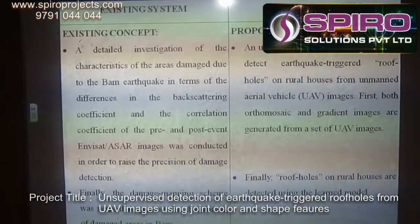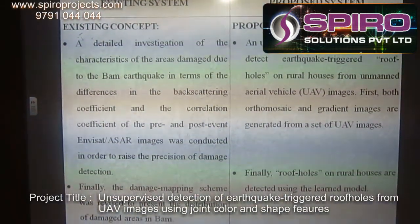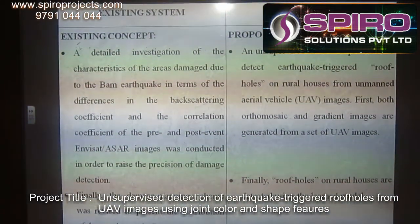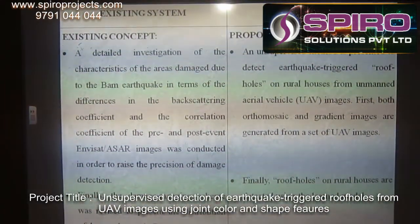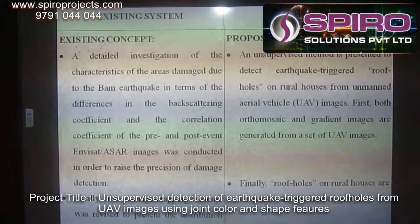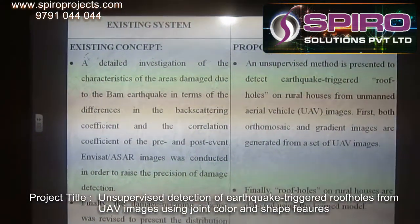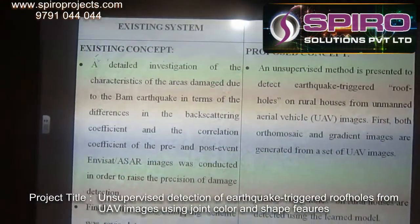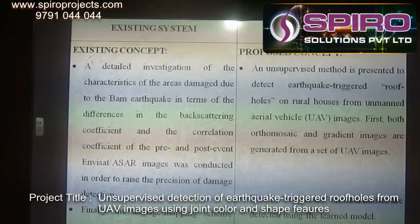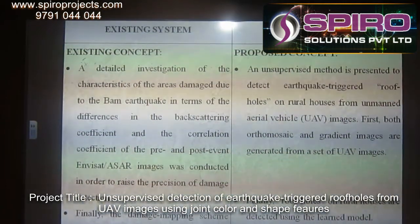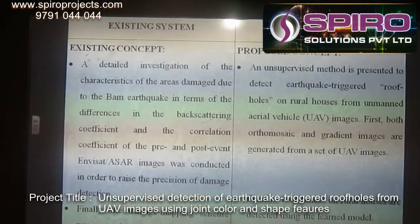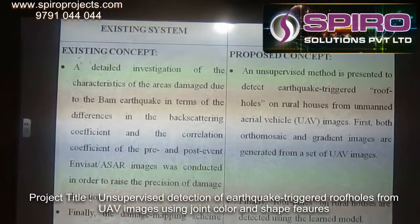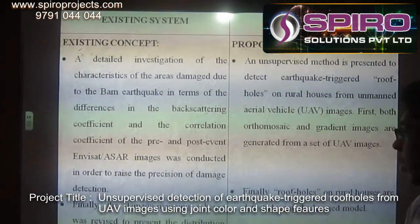Finally, a damage mapping scheme was revised to present the distribution of the damaged areas. In the proposed method, an unsupervised method is presented to detect earthquake-triggered roof holes on rural houses from unmanned aerial vehicle images. First, both orthomosaic and gradient images are generated from a set of UAV images, and finally the roof holes on the rural houses are detected using the learned method.